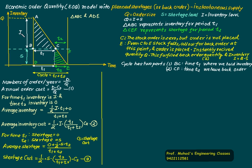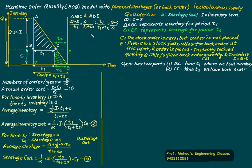The order size is Q, inventory is I, and shortage is S, so I equals Q minus S. To replace the ratios T1/(T1+T2) and T2/(T1+T2), consider that triangles ABC and ADE are similar triangles, so their sides are proportional. The side Q minus S corresponds to T1, and Q corresponds to T1 plus T2. Therefore, T1 divided by (T1 plus T2) equals (Q minus S) divided by Q.